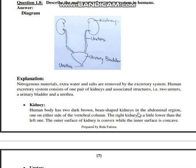The human body has two dark brown bean-shaped kidneys in the abdominal region, one on either side of the vertebral column. The right kidney is a little lower than the left one. The outer surface of the kidney is convex while the inner surface is concave.